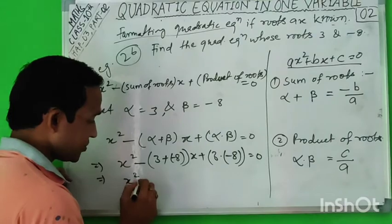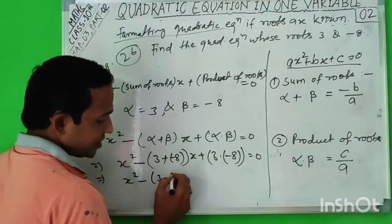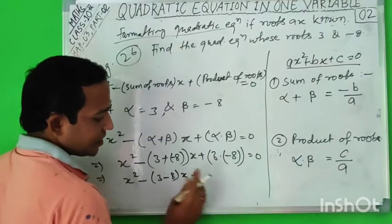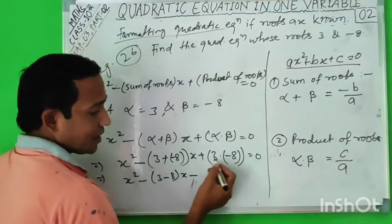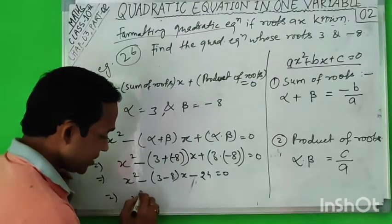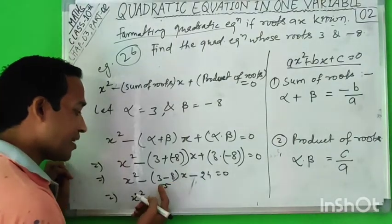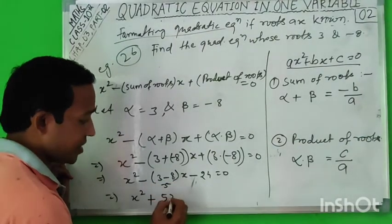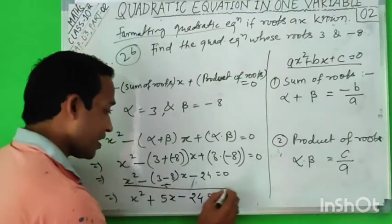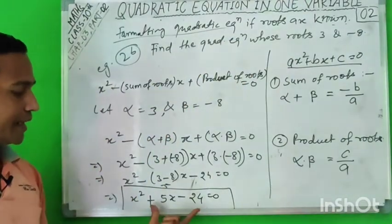Simplifying: x² - (-5)x - 24 = 0 gives us x² + 5x - 24 = 0. This is the quadratic equation we needed to find. So whenever you are given the roots and asked to form the equation, just find the sum and product of roots and substitute into x² - (sum of roots)x + (product of roots) = 0.